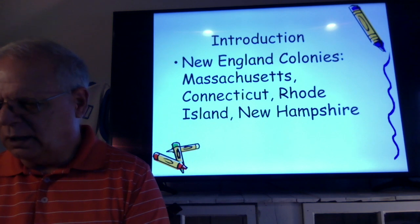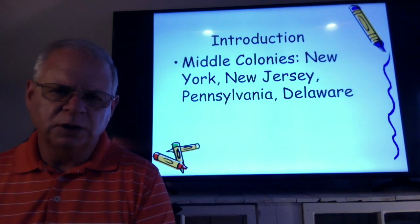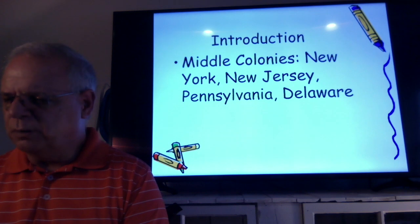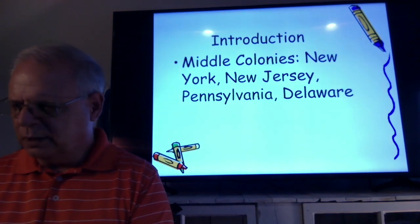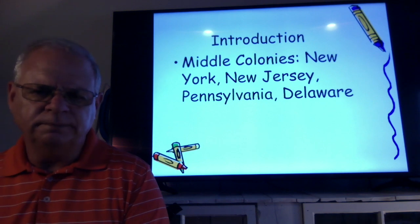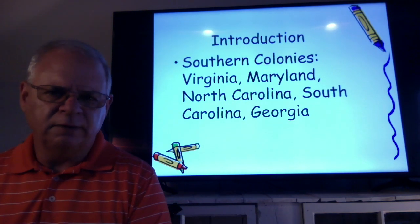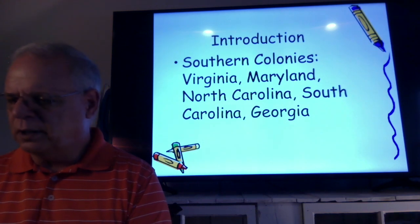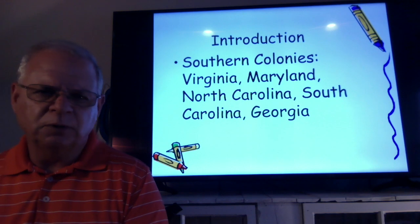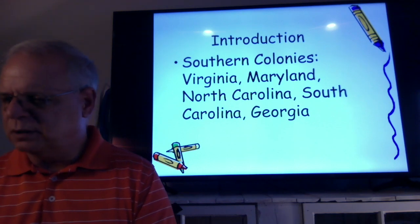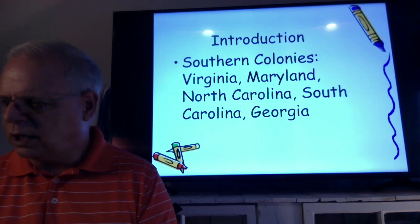Knowing the colonies by region will likely appear on a quiz for this chapter. The middle colonies are New York, New Jersey, Pennsylvania, and Delaware — another four. The southern colonies are the remaining five: Virginia, Maryland, North Carolina, South Carolina, and Georgia. Maryland is probably the one that doesn't ring a bell as being southern, but it was considered a southern colony.